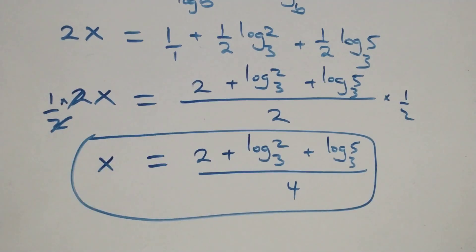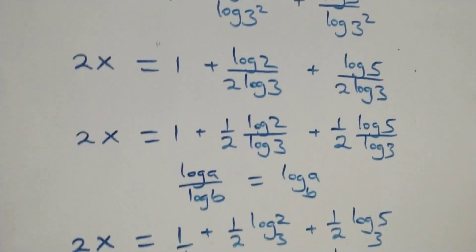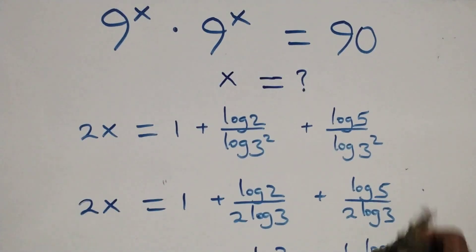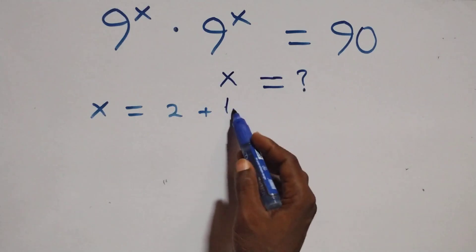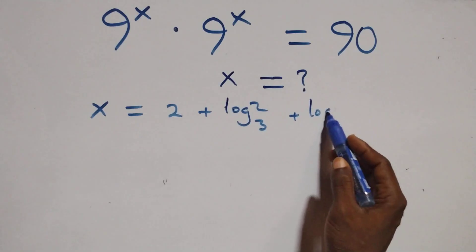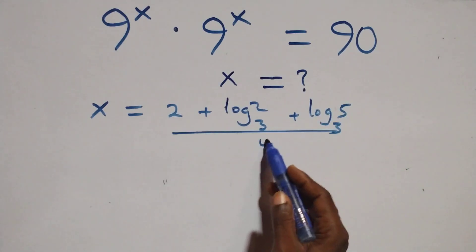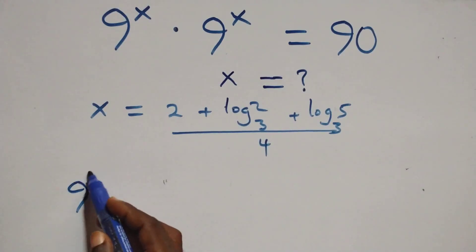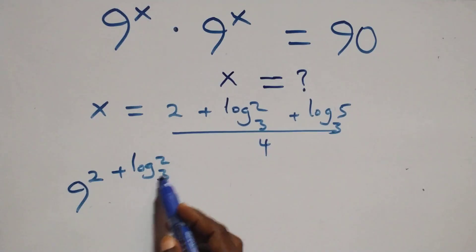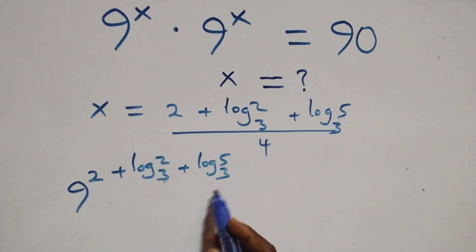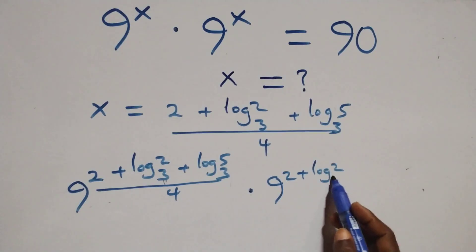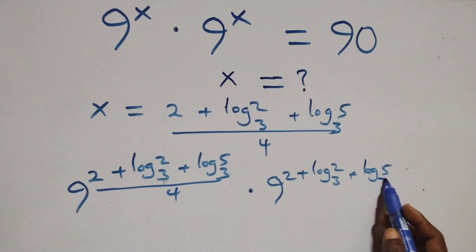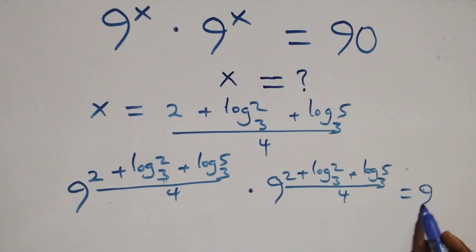So we have the value of x. Let's check by substituting back into the given problem. We substitute x equals (2 plus log 2 base 3 plus log 5 base 3) all over 4. All we have becomes 9 raised to power (2 plus log 2 base 3 plus log 5 base 3) all over 4, times 9 raised to power (2 plus log 5 base 3) all over 4, equals 90.